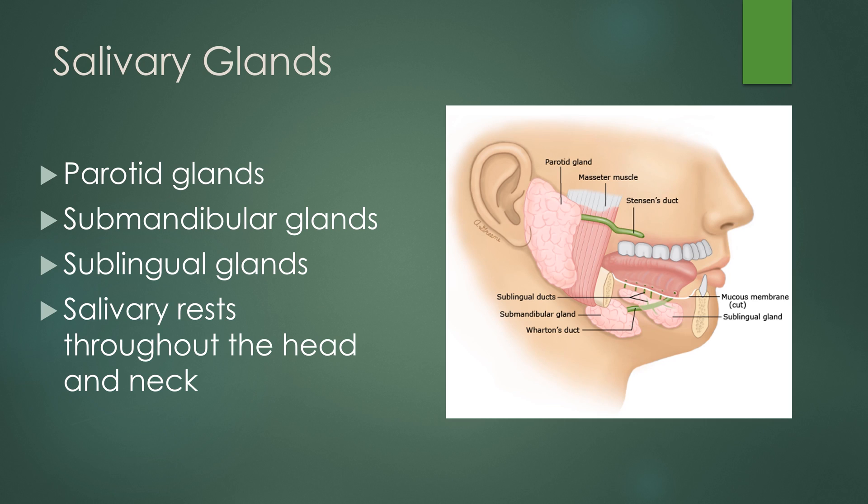To start, the salivary glands consist of the parotid glands, the submandibular glands, the sublingual glands, and you have salivary rests throughout the head and neck, including within the paranasal sinuses.